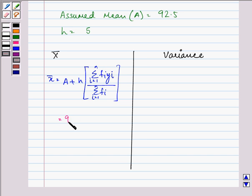And that is further equal to, we have assumed mean as 92.5, so we have 92.5 plus 4 into summation Fi Yi was 6, divided by summation Fi that is 60.